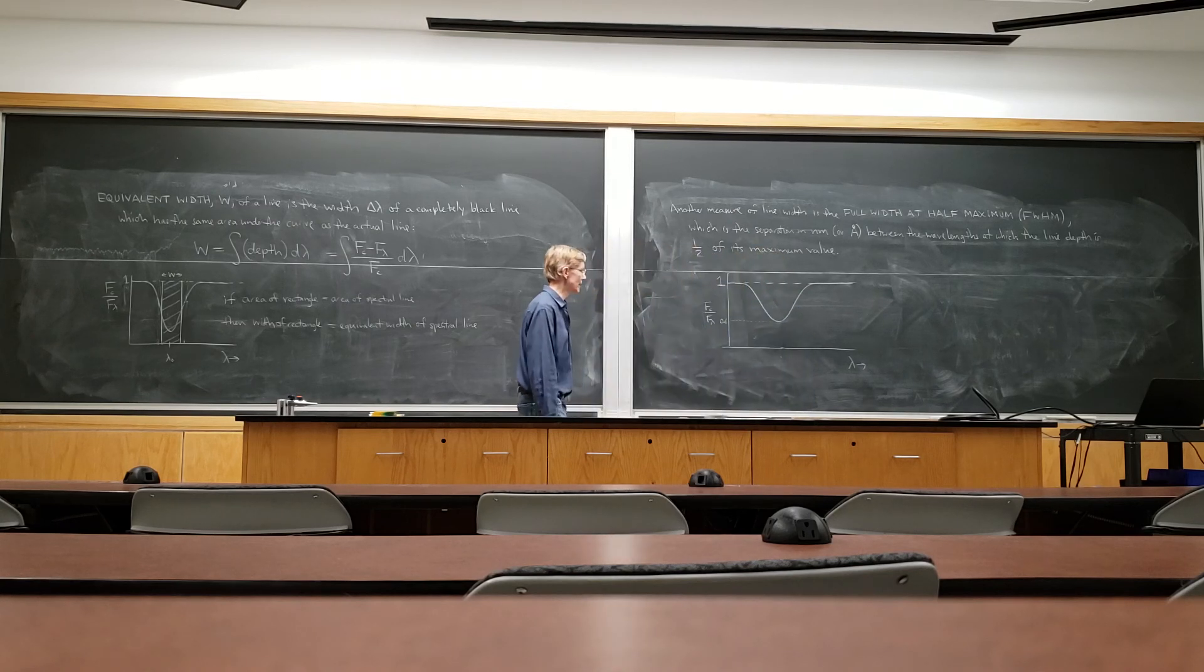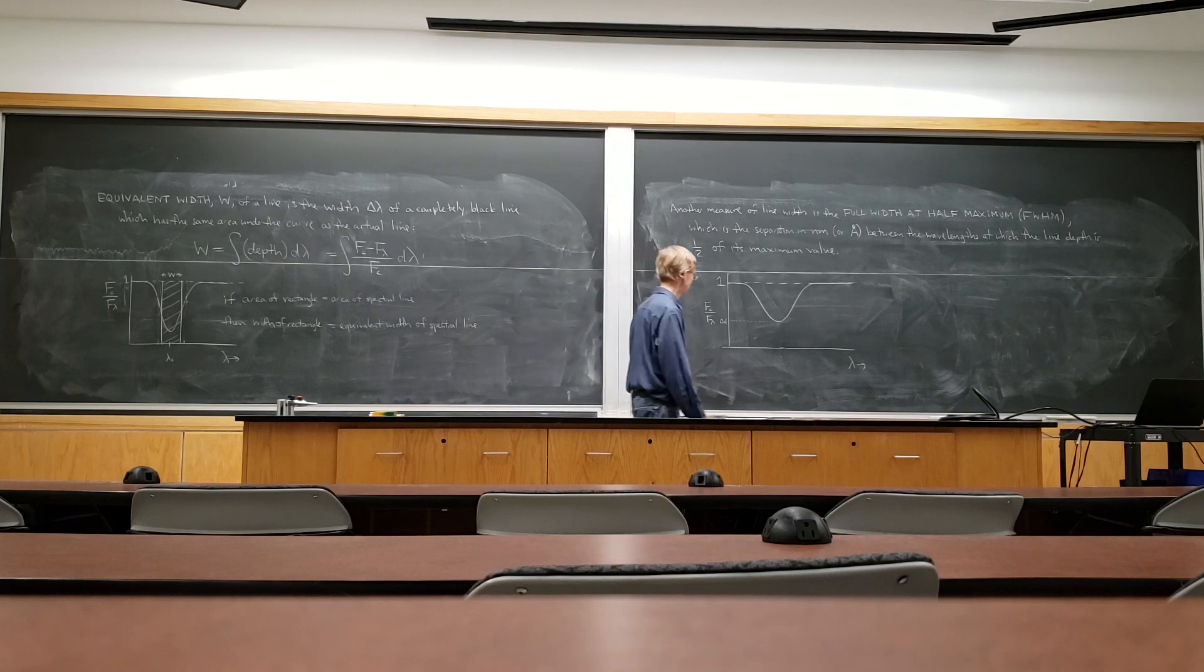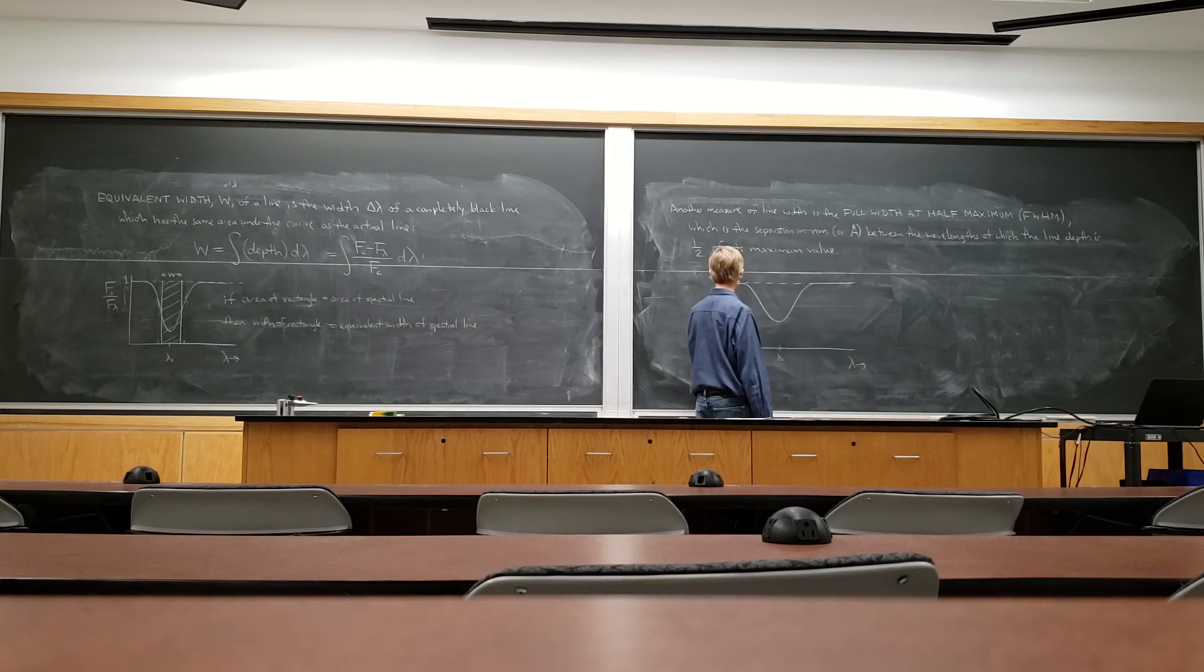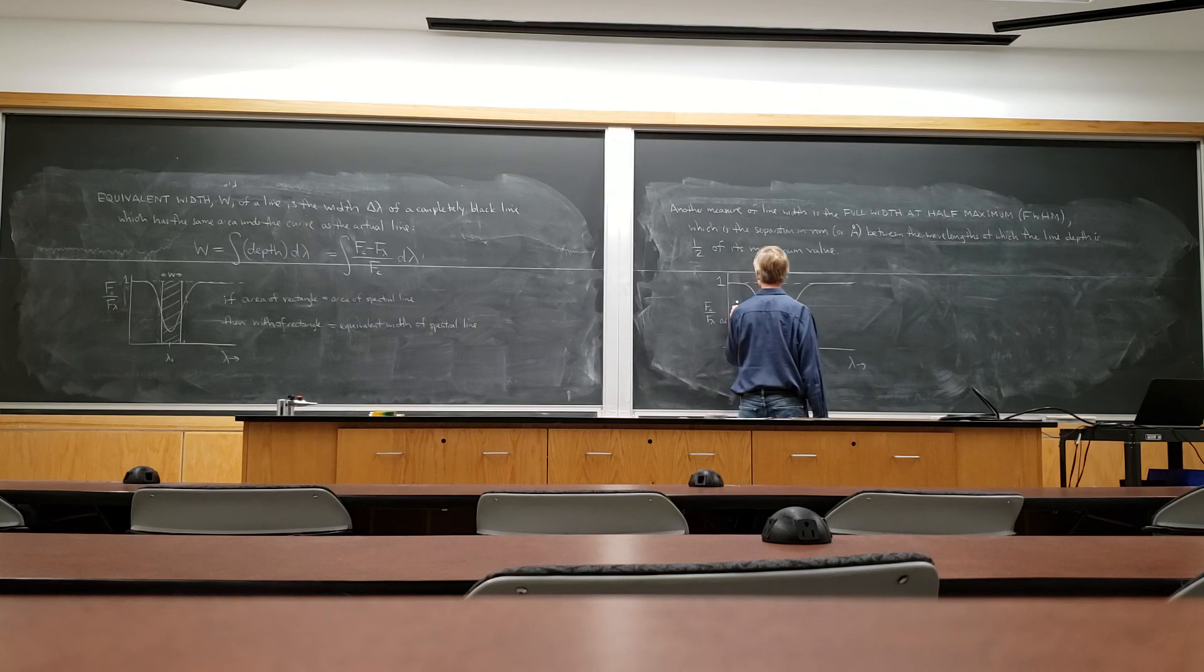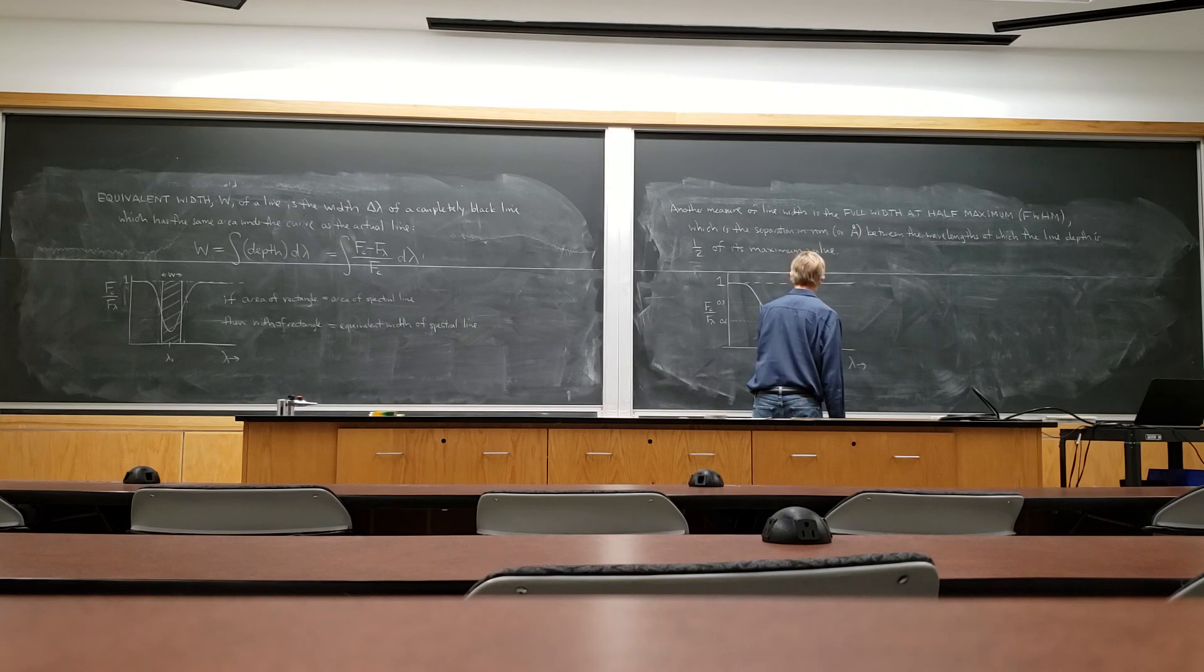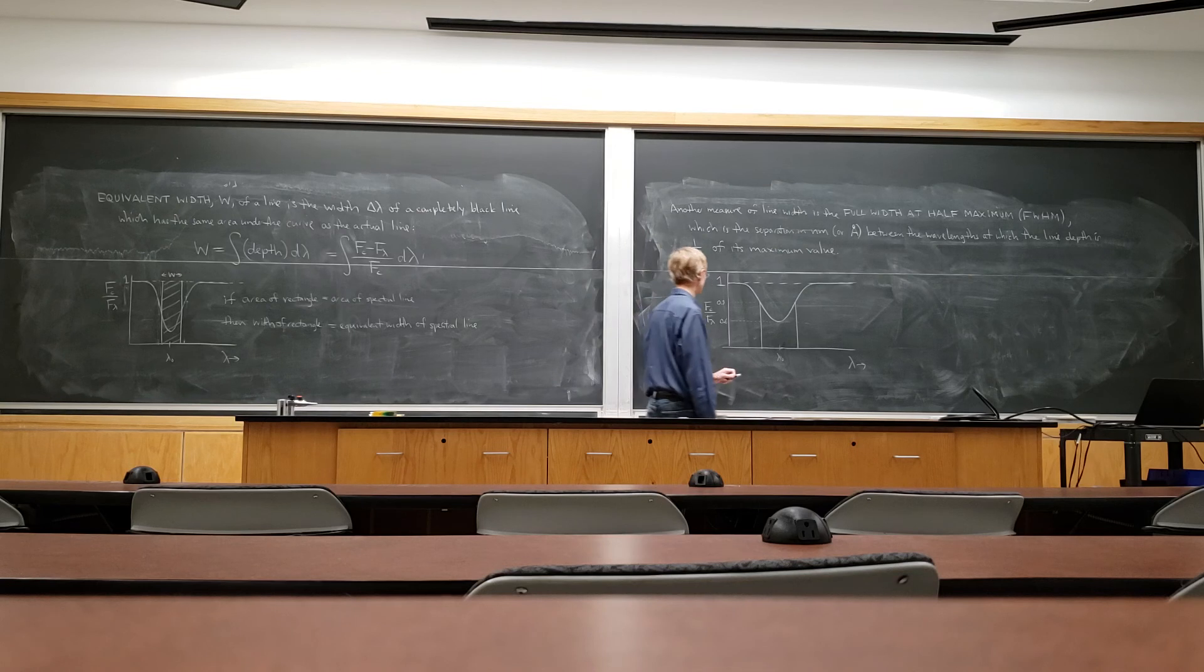So let's say that the maximum depth is 0.6. Then you go to the points where the line depth is half of that, 0.3, and you say, how far apart in wavelength are those two points? And that's the full width at half the maximum.